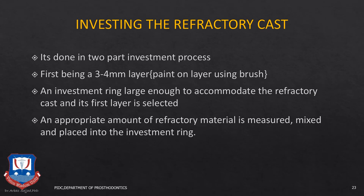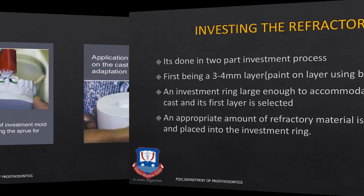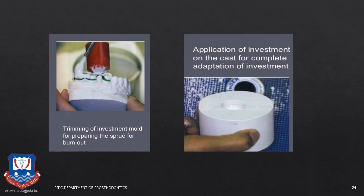The cast is now ready for spruing and investing. Investing is done in two parts — first a three to four mm layer — and is similar to how we duplicate a refractory cast. We invest the refractory cast in an investment material which has the same thermal and hydro expansion as the refractory cast. Spruing is done once the wax pattern is fabricated. A large reservoir is attached to the wax sprues, which are then attached to the framework, and this is then invested in the investment material of choice.